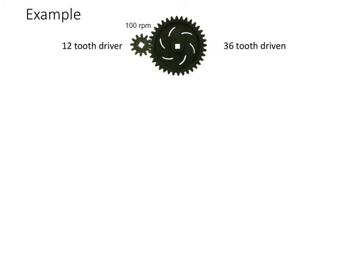Let's look at this example here. First we're going to look at what we're given. We've got a 12 tooth driver gear. So this small gear here is going to be my in. We have a 36 tooth driven gear.